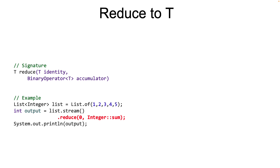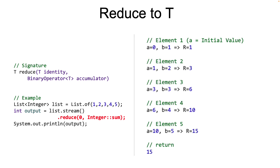Let's take an example. On the screen, the reduce method is called with the initial value set as 0. So we do not require an optional as a return type because the reduce method will always return a value. In case there are no elements, it will return the default value of 0. The reduce method will follow the steps as shown to get the final result. We are assuming that A and B are parameters to the accumulator function, which is Integer::sum. The only difference from the last reduce method is that the initial value is set to the identity value — in this case, 0.